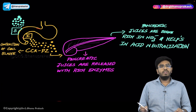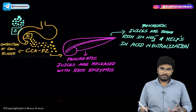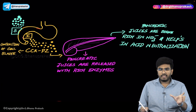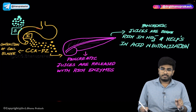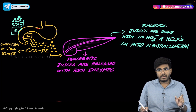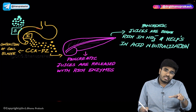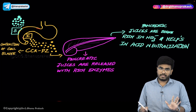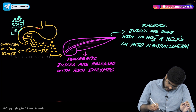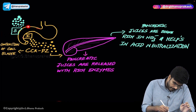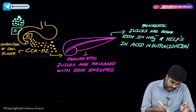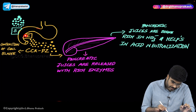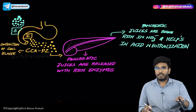Now let's talk about two different types of cells present in the duodenum and how their secretions act on the pancreas. The first type is the S cell, which is present in the duodenum. The second type is the I cell. Both S cells and I cells are present in the duodenum.